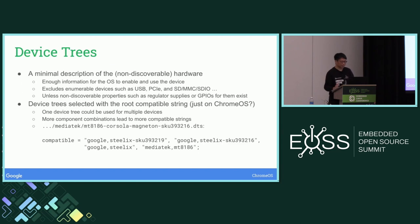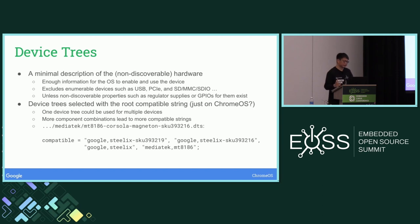Device trees. I think everyone here pretty much knows what a device tree is. It's a minimal description of non-discoverable hardware for your system — enough information for the operating system to enable and use the device. It doesn't include enumerable devices such as USB, PCI Express, SDIO, unless these devices have non-discoverable properties such as a regulator supply or GPIOs that need to be toggled for them to come to life.